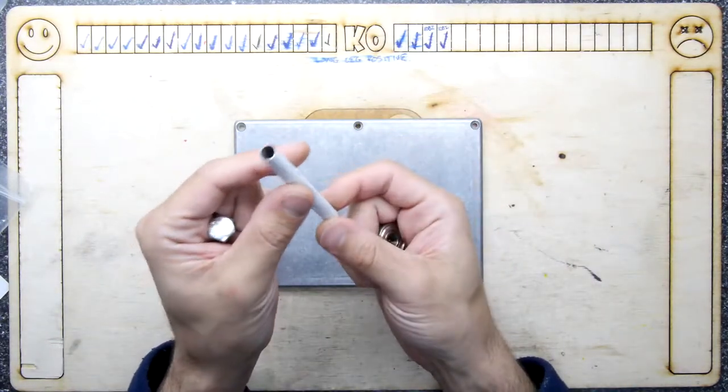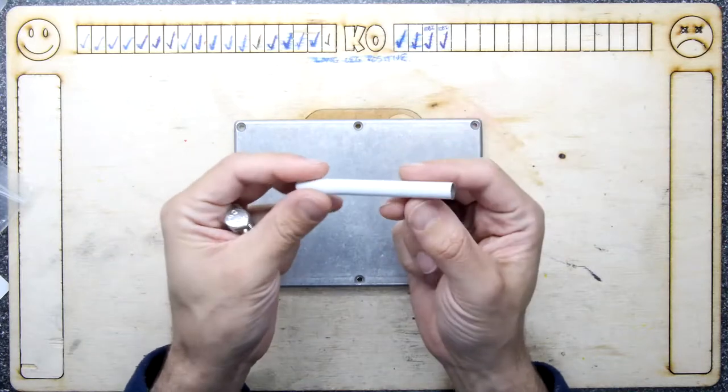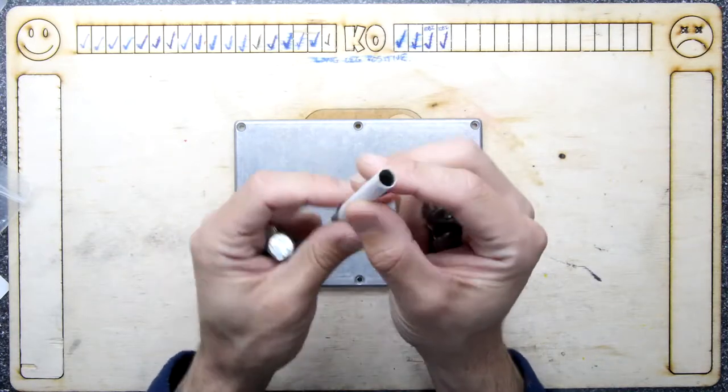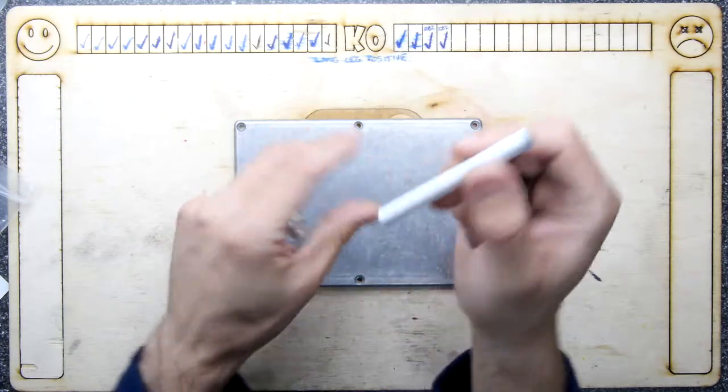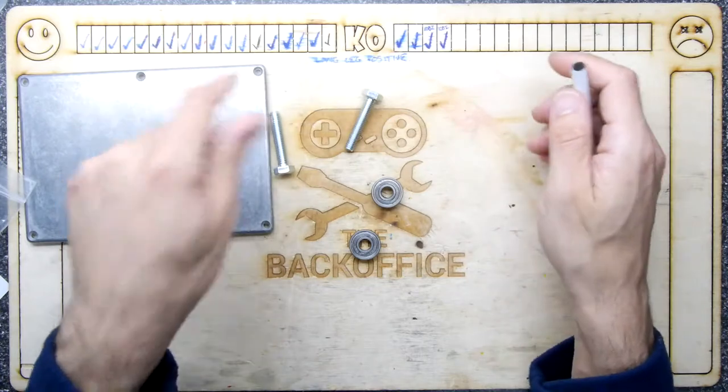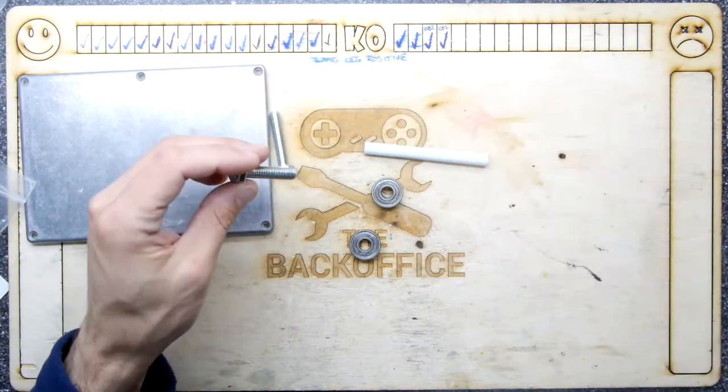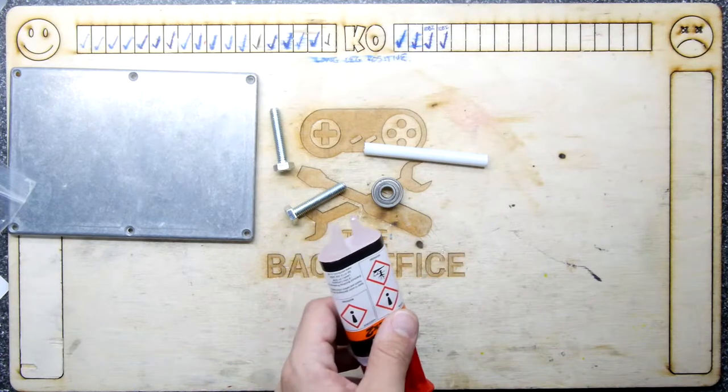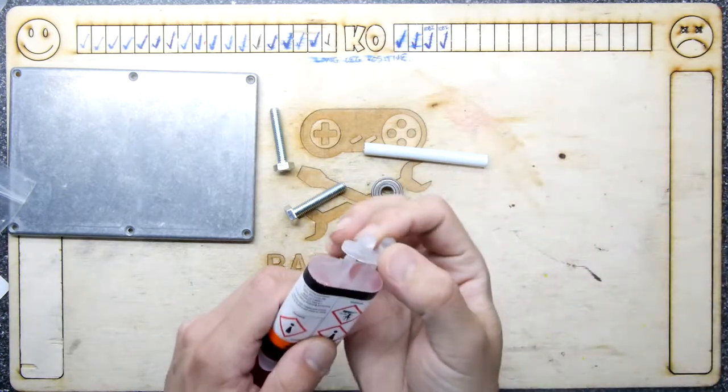So I found a bit of metal tube. I don't even know what it's for. It was just in the garage under the litter tray or something. We'll give it a wash. It's a bit of metal tube. You can see it's just a metal tube. I've got a couple of bearings like you get in fidget spinners and I've got a couple of bolts. They're quite long, a bit overkill.